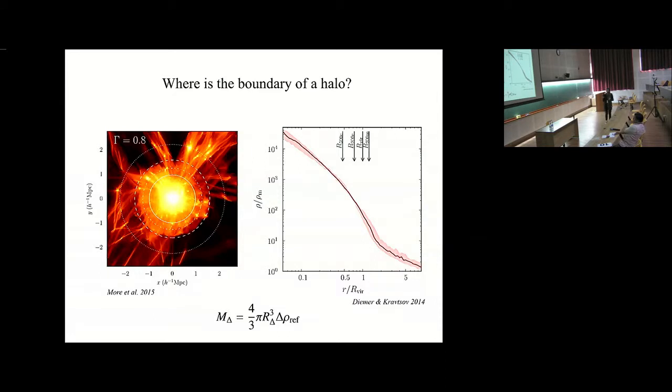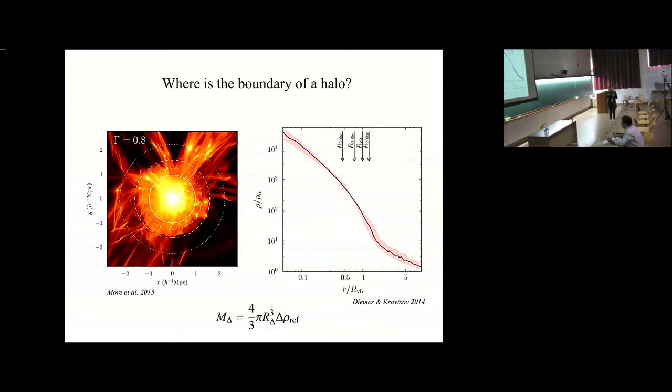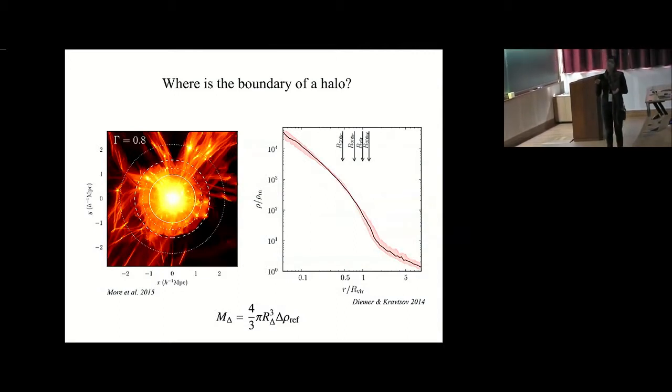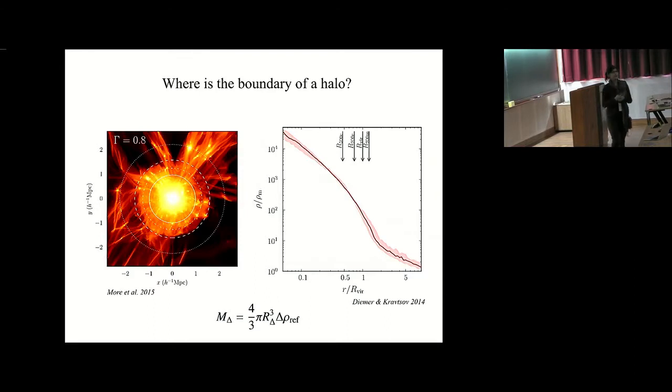For example, this is a snapshot, a picture of a halo, and this is a stacked density profile of a bunch of halos. Depending on what you're interested in, there is actually a variety of ways in which you can define the edge of a halo. The different definitions, which are mostly based on quantifying a certain overdensity over the background density of the universe, can probe very different regions of the halo. For example, R500C can be here, which is the radius where the enclosed overdensity is 500 times the background critical density, or R200 matter can be somewhere in the outskirts.